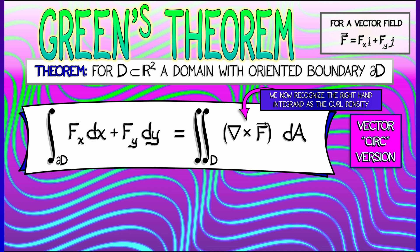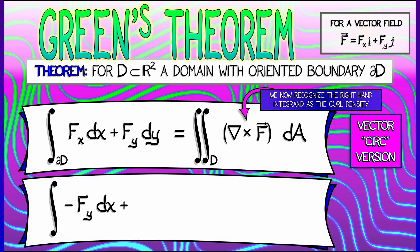Now, that's the circulation interpretation. If we compute the integral of the flux one form, that is minus fy dx plus fx dy, if we integrate that along the boundary of D to get the net flux,